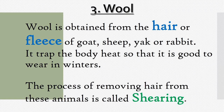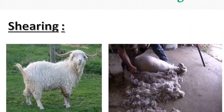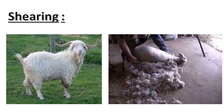Wool is the third example of fiber. Wool is obtained from the hair or fleece of goat, sheep, yak, or rabbit. It traps body heat, so it is good to wear in winters. The process of removing hair from these animals is called shearing. By looking at the picture, we can see the hair or fleece of sheep being removed — this process is called shearing.